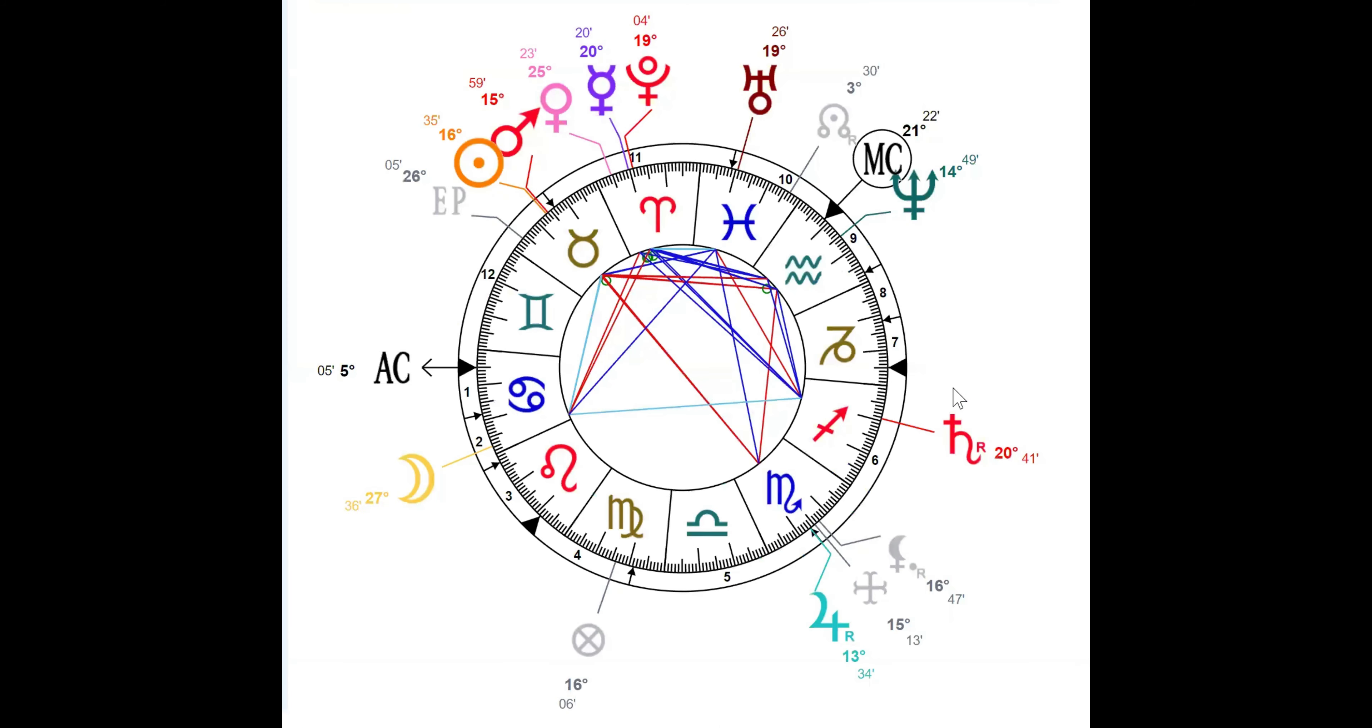Moon in the first in Cancer—wow. He's very Scorpionic. Look at all that Aries—sun conjunct Mars. That's all the Aries energy. Nothing in the 10th house, nothing in Capricorn. Well, that happens a lot.